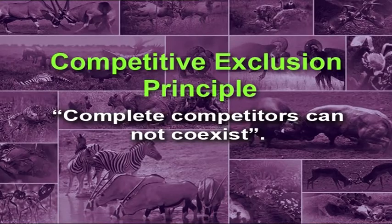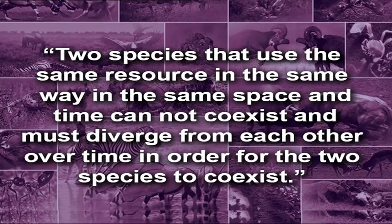Based on such results and experiments made on Paramecium species, Gause suggested the hypothesis which has been restated by Hardin in 1960 as the competitive exclusion principle. In its simplest form, the competitive exclusion principle states that complete competitors cannot coexist. This concept is considered the cornerstone of ecology, which suggests that ecological segregation can lead to reduction in competition and permit coexistence. The principle explains that two species that use the same resource in the same way, in the same space and time, cannot coexist.